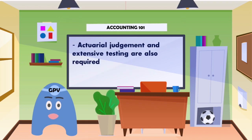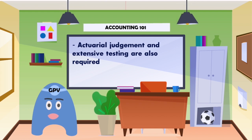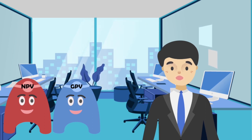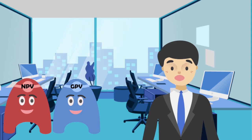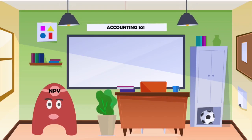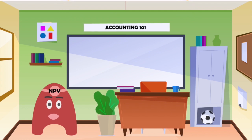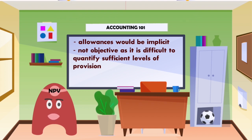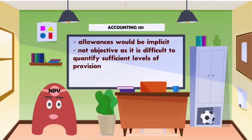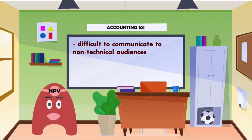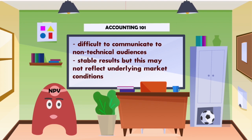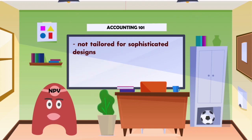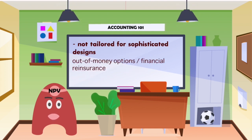It seems to me that both of you have varieties of advantages. But as nothing is perfect, what are your drawbacks, GPV? Using the NPV method, allowances would be implicit. Some people also view this method as not objective, as it is difficult to quantify sufficient levels of provision despite overall prudence. This method will be difficult to communicate to non-technical audiences. The NPV method does have stable results, but this may not reflect underlying market conditions. NPV method is also not tailored for sophisticated designs such as out-of-the-money options or financial reinsurance.